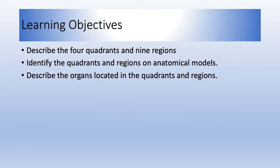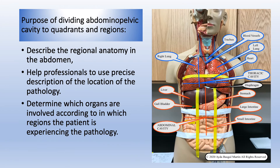We will describe the four quadrants and nine regions and identify them on anatomical models. We will discuss the organs found in these divisions. The purpose of dividing the abdominopelvic cavity into quadrants and regions is to describe the regional anatomy and help professionals use precise descriptions of the location of pathology and determine which organs are involved according to which regions the patient is experiencing pain.